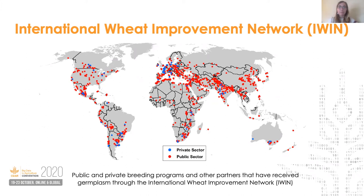IWIN is a network of public and private sector collaborators worldwide that grow and test CIMIT's bread wheat and durum wheat varieties. The IWIN also includes partners in the National Agricultural Research Systems, or NARS. Through this network, partners are able to test new material coming out of CIMIT. One of the main benefits to CIMIT is that partners are requested to return the testing data back. Over the past four decades, CIMIT has amassed millions of data points on yield and other agronomic traits from nurseries at locations in over 90 countries — probably one of the most extensive multi-environment trials of any crop in the public sector.